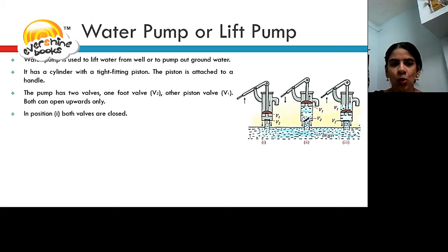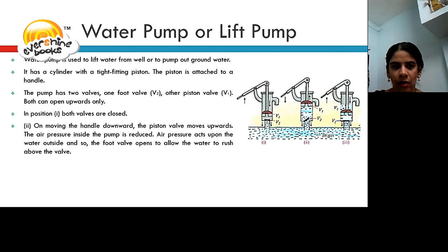In position 1, both the valves V1 and V2 are closed. In position 2, the handle is moved downwards. This makes the piston valve to move upwards. The air pressure inside the pump is reduced. Air pressure acts upon the water outside and so the foot valve opens to allow the water to rush above the valve.